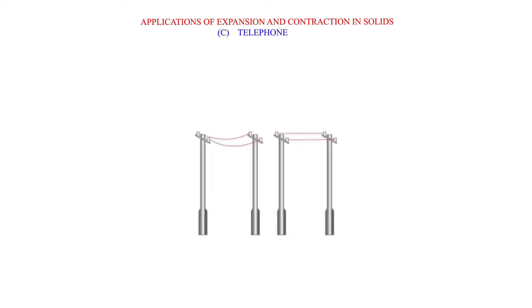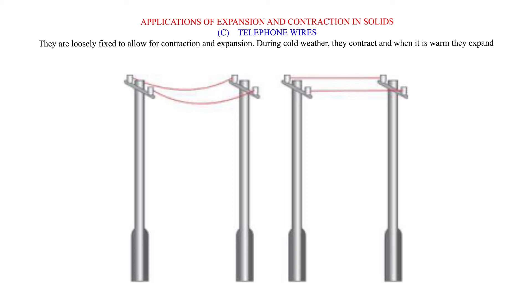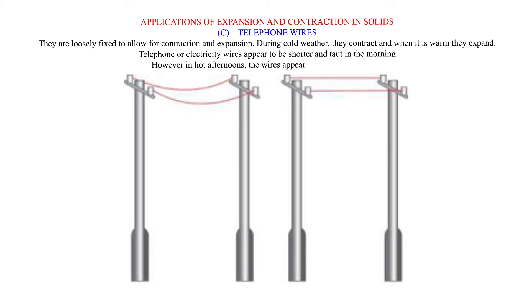Applications of Expansion and Contraction in Solids. C. Telephone Wires: They are loosely fixed to allow for contraction and expansion. During cold weather, they contract, and when it is warm they expand. Telephone or electricity wires appear to be shorter and taut in the morning. However, in hot afternoons, the wires appear longer and slackened.